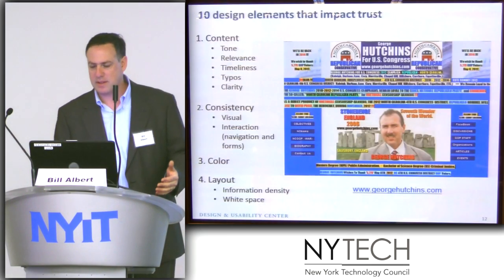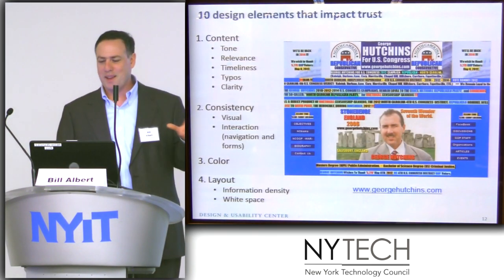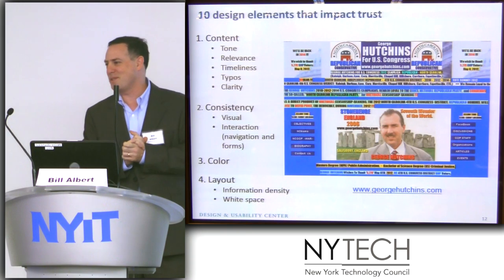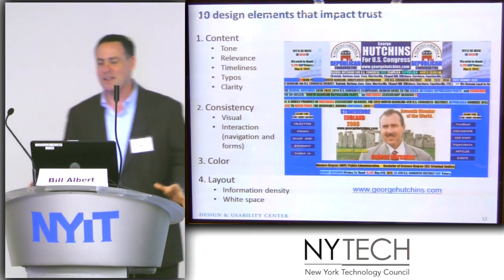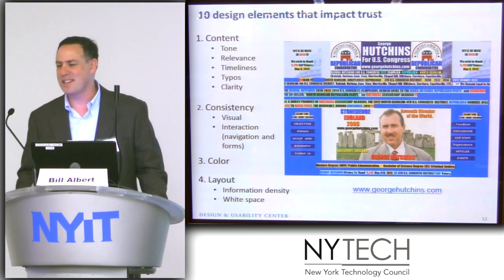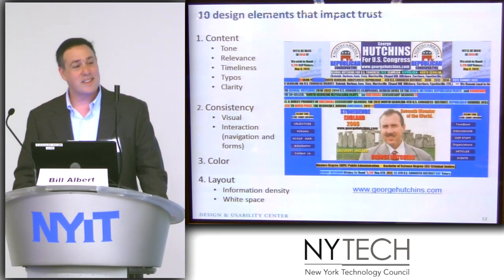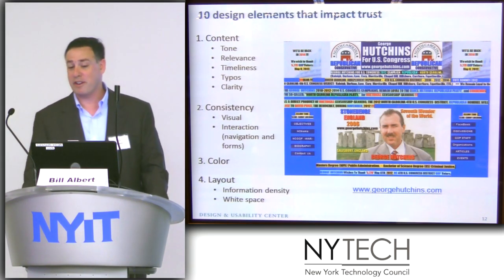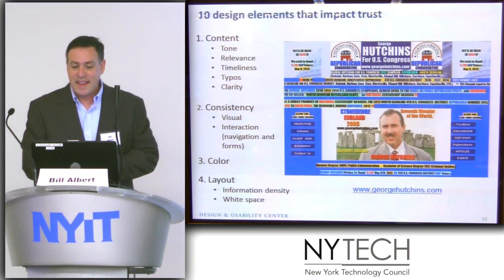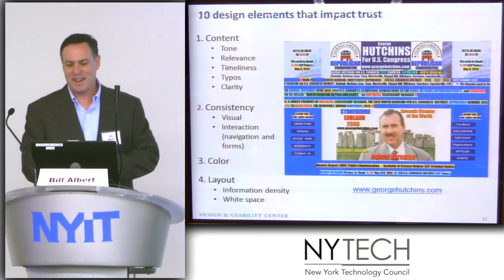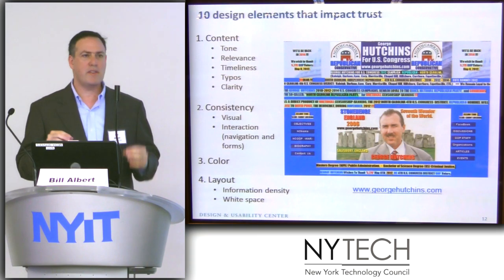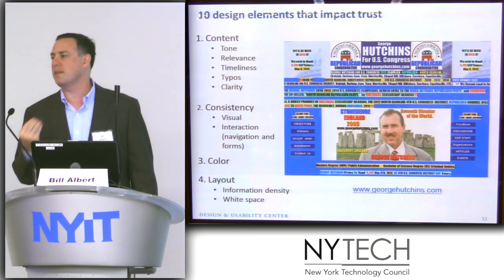Now I want to look at specific elements about the impact of trust — I've dissected it down to what I think are ten really important pieces. I had a grad student find me some really bad websites this past week, and she did a fantastic job. This first example is real — it's a current member of Congress, George Hutchins, from North Carolina. There are different elements of trust, and I've kind of dissected them into ten key pieces.